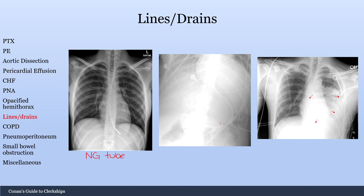Here we have a Dobhoff tube — a tube that goes further and is placed into the duodenum, so this is also checking for ideal placement. One way to tell the difference between a Dobhoff tube and an NG tube is that the NG tube shows one more opaque area, while the Dobhoff tube shows two walls — the inner and outer wall. NG tubes can be used for feeding or suction, whereas Dobhoff tubes are only used for feeding.